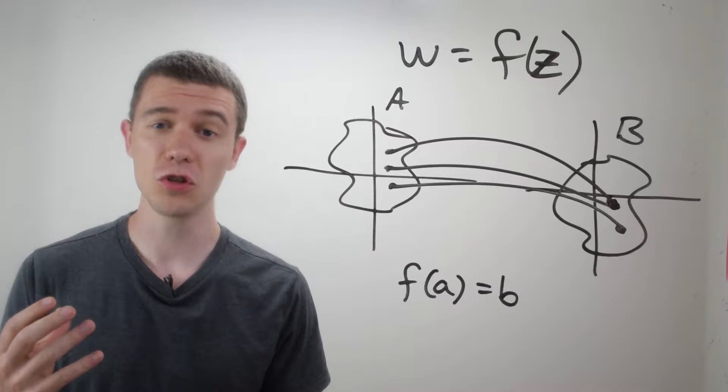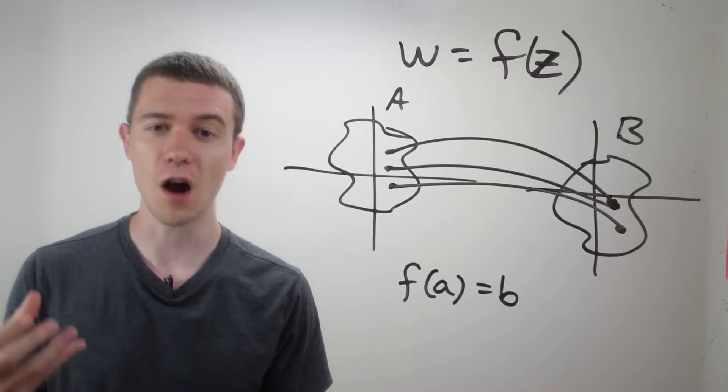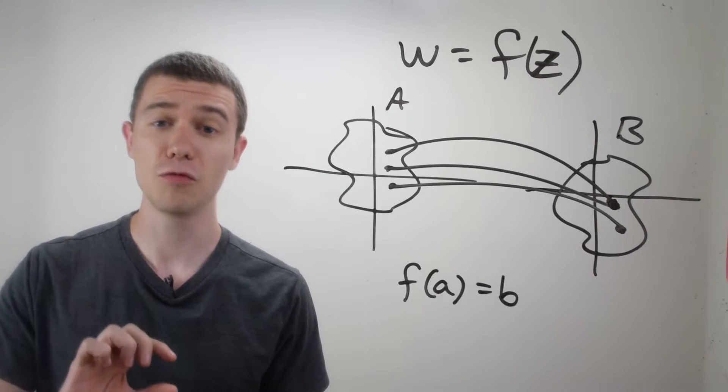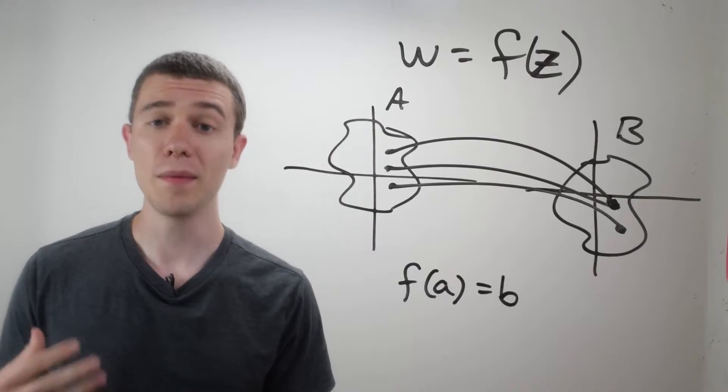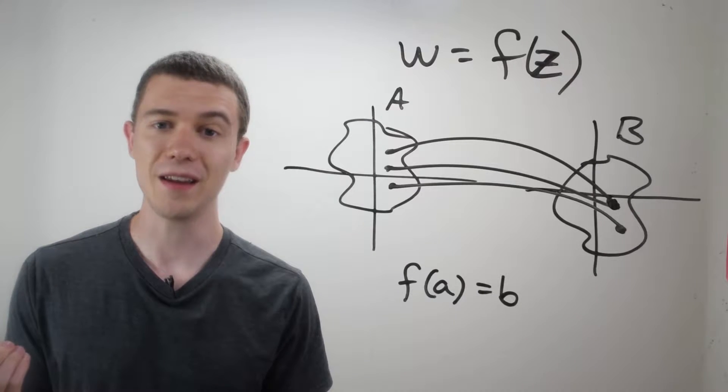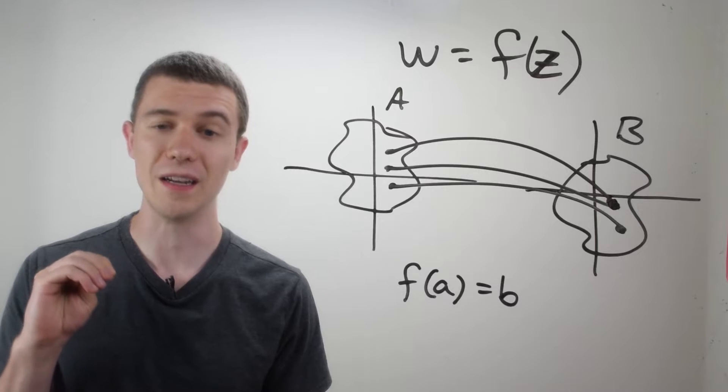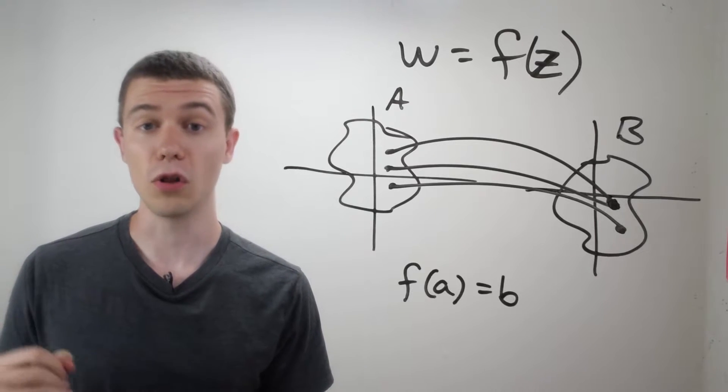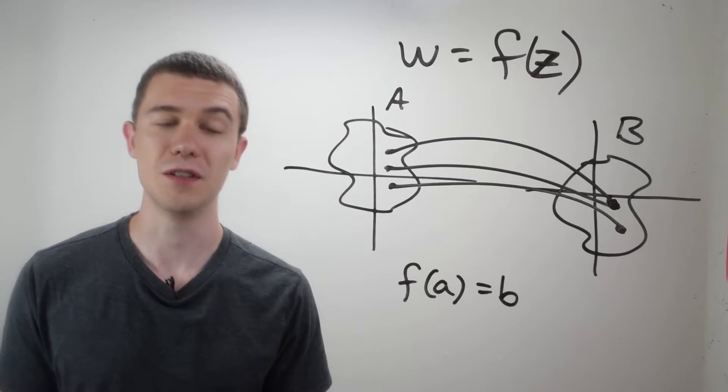So what is a complex function? By definition, a complex function is just a function whose domain and range are subsets of the complex plane. Remember what a function really does. It takes every element in its domain and maps it to a single element in its range. And here, the domain and range could be all of C, the complex plane, or just a subset of C.